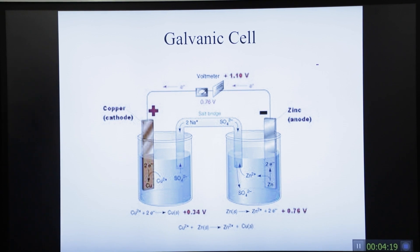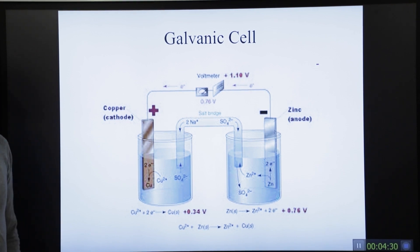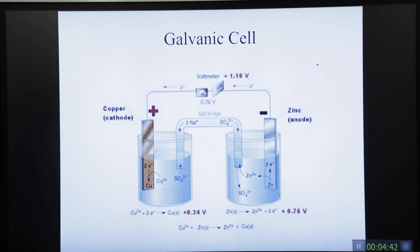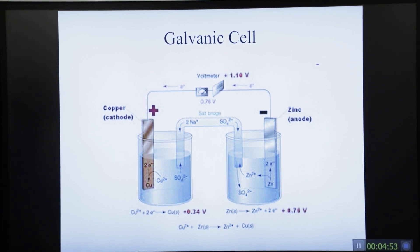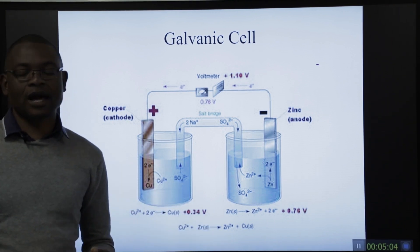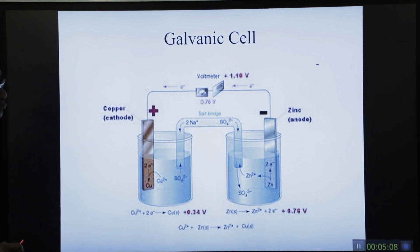Looking more closely at this galvanic cell — copper as cathode and zinc as anode — in the previous session I took time to explain how to make an intelligent decision about which material to select as anode and which as cathode. I gave you three rules on how to determine which materials to put together when making a galvanic cell, and which one will stand out as cathode and which as anode.